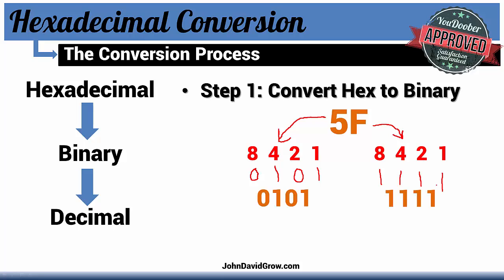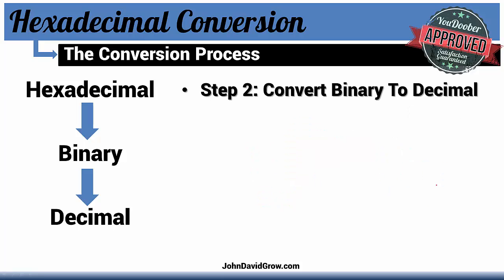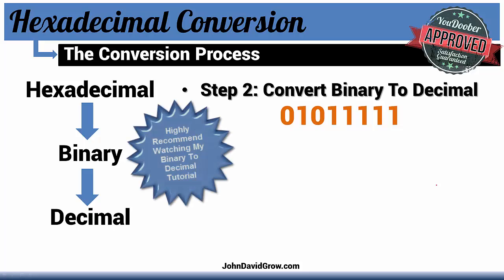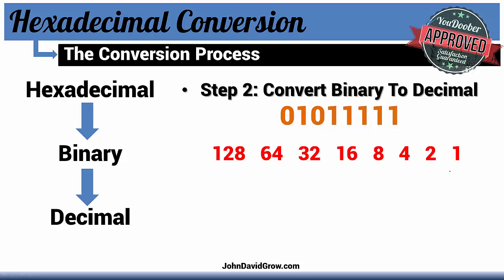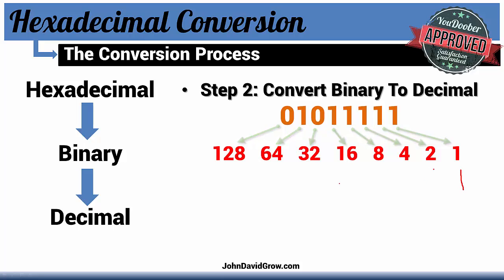Now you take those two values and smash them together. Then you can convert your binary to decimal. You draw out a conversion table starting from the right and working left: 1, 2, 4, 8, and so on. For each binary digit you want one column of numbers. You plug it in starting from the right and working left: 1, 1, 1, 1, 1, 0, 1, 0. Then you add up the 1s. 64 plus 16 is 80, then 88, 92, 94, 95.